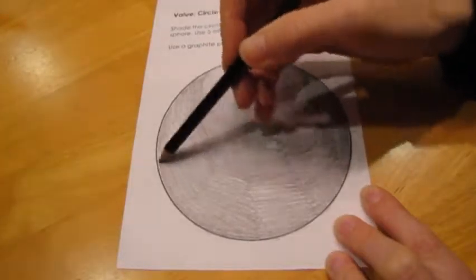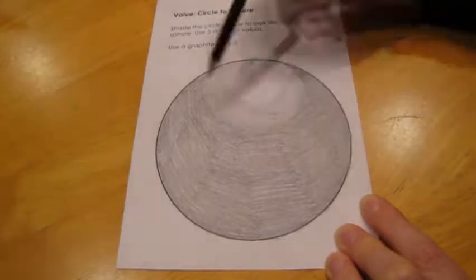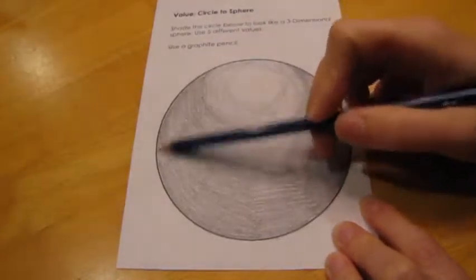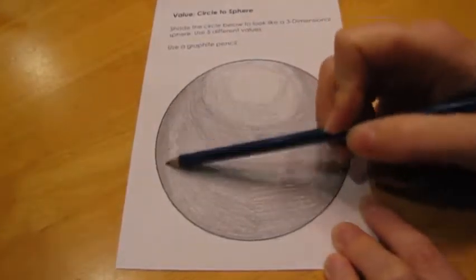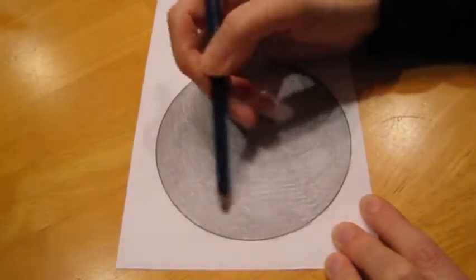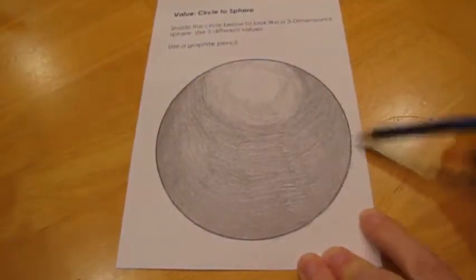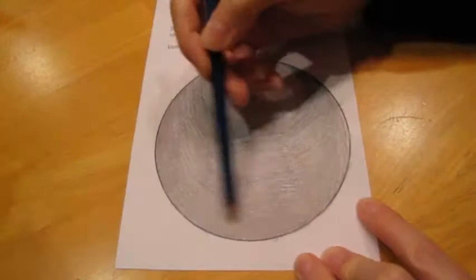As I move from one value to another, I am trying to press a little bit harder with my pencil, maybe even changing to a pencil like a 4B or even a 6B after I have my lighter values done with my HB or even my 2B, so that I can make those darker values easier and quicker.